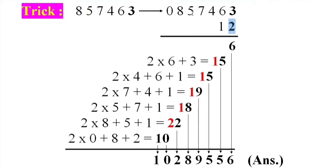2 into 7 plus 4 plus carry 1 equal 19. 2 into 5 plus 7 plus carry 1 equal 18. 2 into 8 plus 5 plus carry 1 equal 22. 2 into 0 plus 8 plus carry 2 equal 10. Now write down 6, 5, 5, 9, 8, 2, 0, 1. This is answer: 10289556.